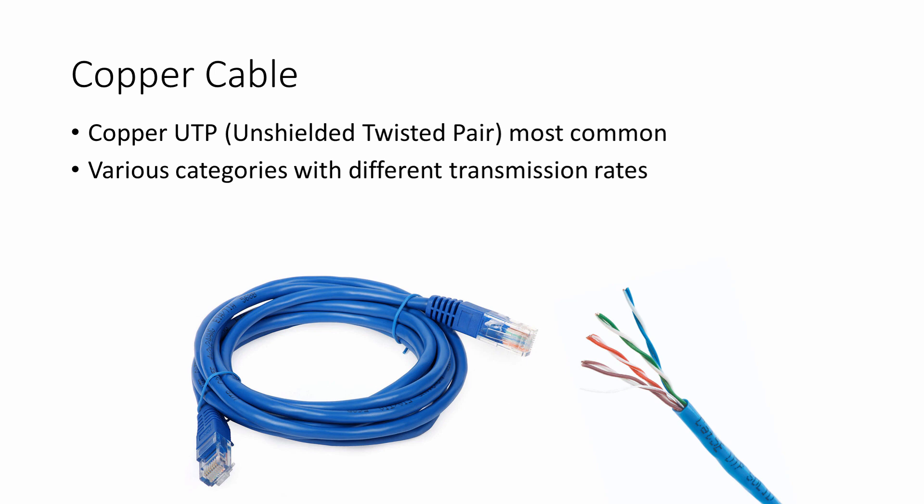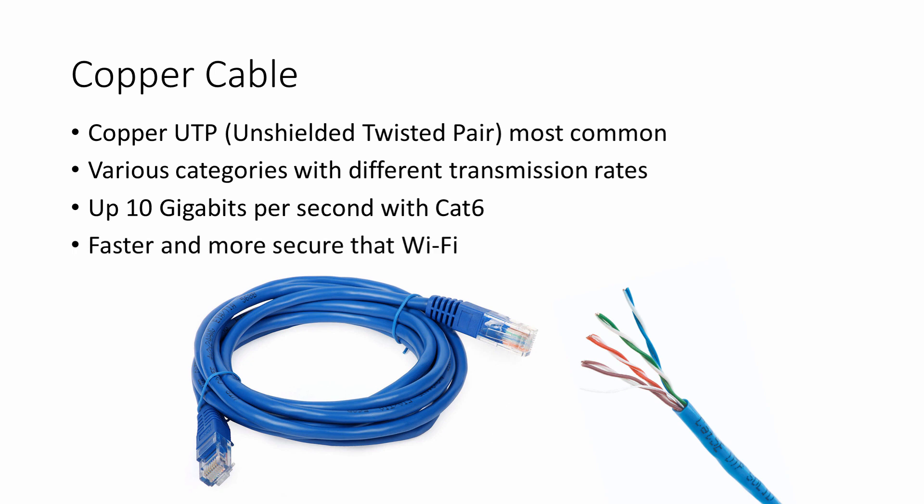There are various categories of UTP cable with different characteristics and speeds. Category 6, otherwise known as CAT6, is relatively inexpensive and can carry up to 10 gigabits per second on a cable as long as 50 metres. The best copper cables can carry up to 100 gigabits per second. Wired networks are considerably faster than wireless ones, and less prone to attack by hackers.